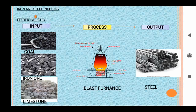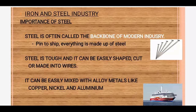The output obtained is steel, which may be used by other industries as raw material. Iron and steel industry is often referred to as the backbone of modern industry, because almost everything is either made from iron or steel or has been made using tools and machinery of these metals. Materials of our day-to-day use, starting from a safety pin to the buildings we live in, are made from steel. Steel is tough and can be easily shaped, cut, or made into wires, and can be mixed with alloy metals like copper, nickel, and aluminium.